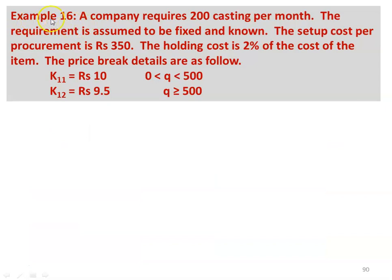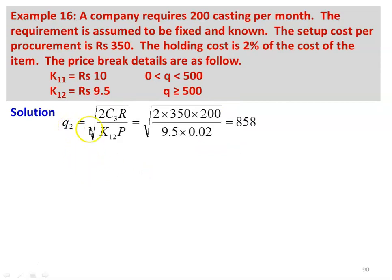Example number 16: a company requires 200 castings per month, the requirement is assumed to be fixed and known. The setup cost per procurement is ₹350, the holding cost is 2% of the cost of the item. Price break details: K11 = ₹10 when purchase quantity is 0 < Q < 500, and K12 = ₹9.5 when purchase quantity Q ≥ 500. Solution: calculate Q2 = √(2C3R / (K12×P)) = √(2×350×200 / (9.5×0.02)) = 858. C3 is the procurement cost and P = 2% = 0.02. So Q2 = 858 and B = 500.